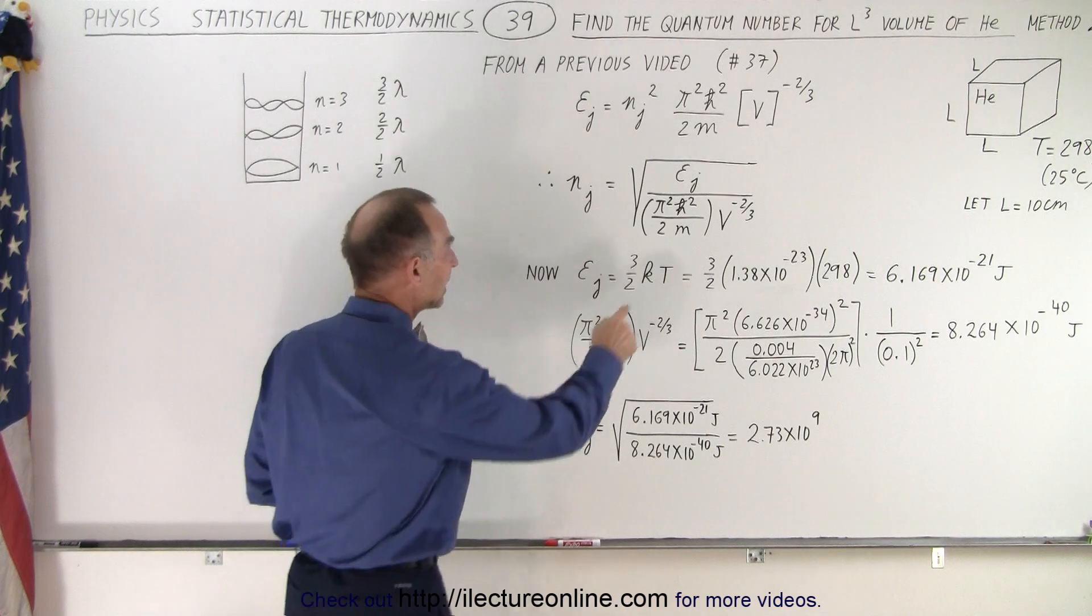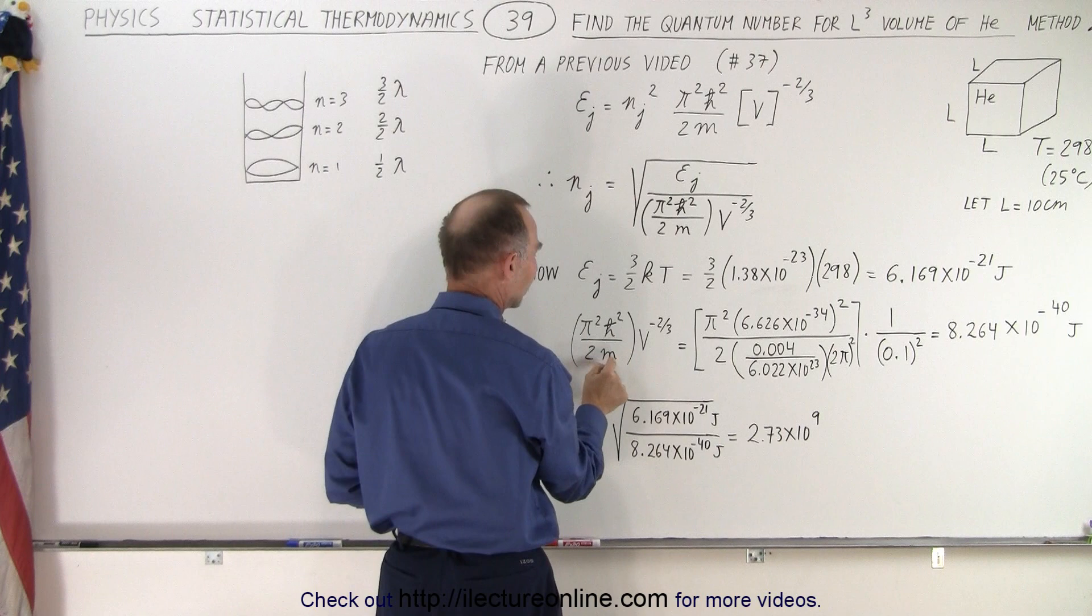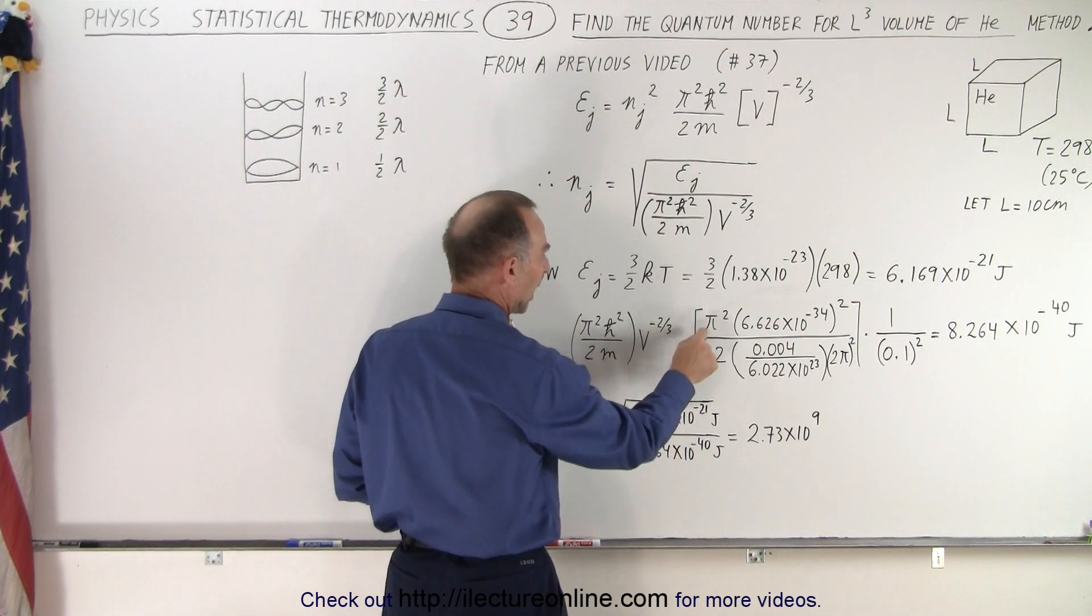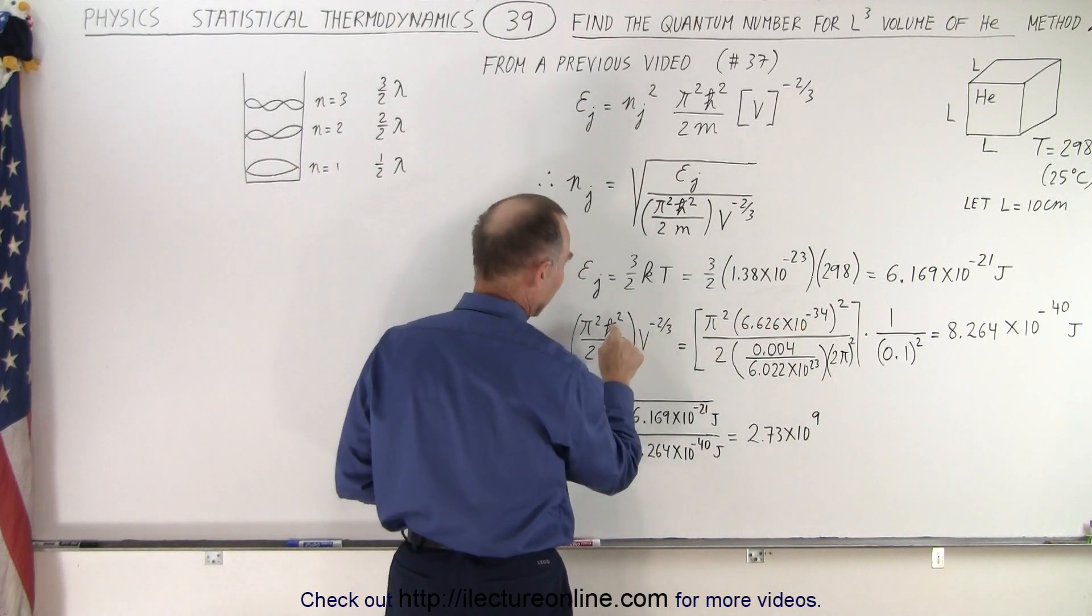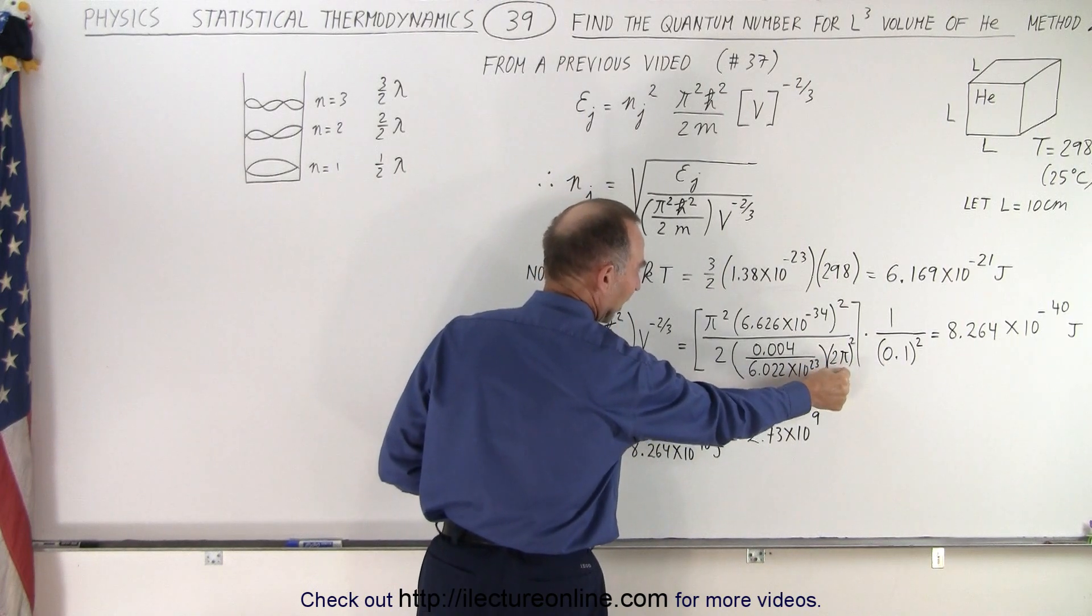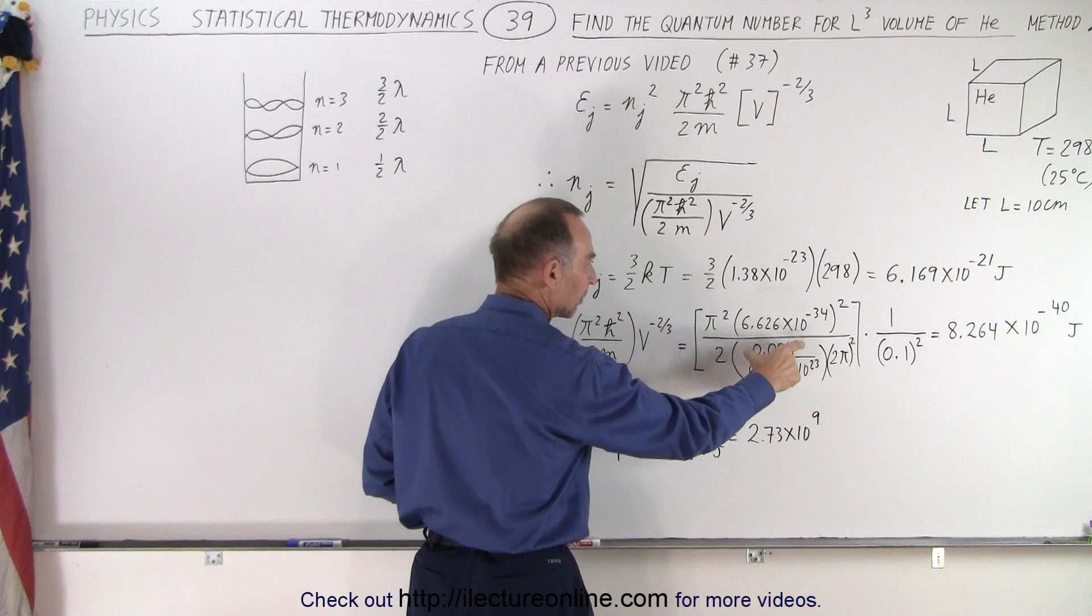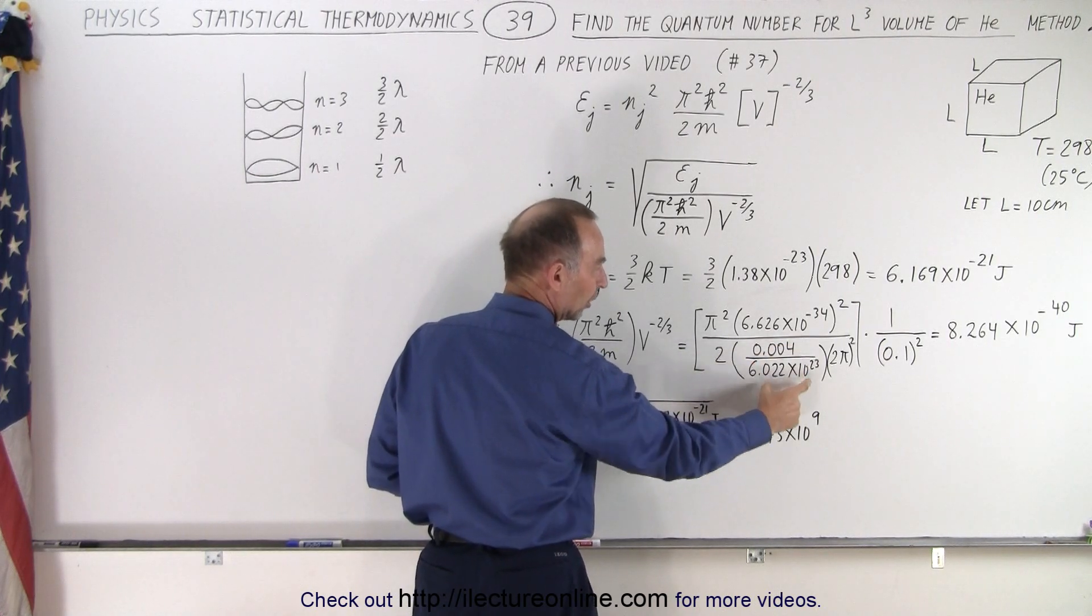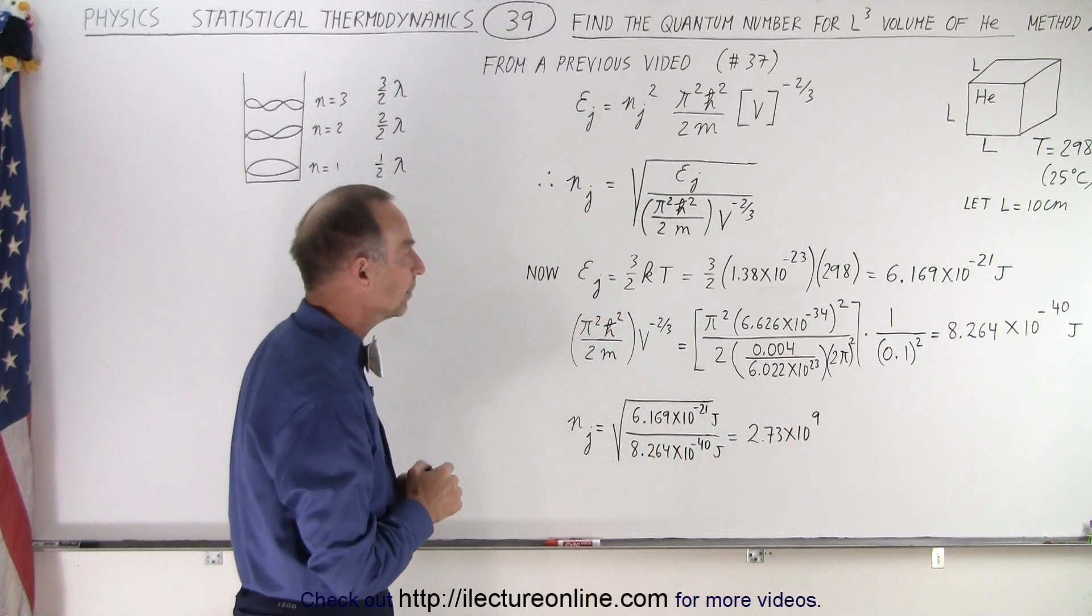So now we take the denominator here. We have pi squared h-bar squared divided by twice the mass, and the volume to the negative 2/3 power. So pi squared times Planck's constant squared. Of course, h-bar means Planck's constant divided by 2 pi, so in the denominator we have 2 pi squared. Twice the mass of a helium particle. This is the molar mass in kilograms, 0.004, divided by Avogadro's number. We get the mass of a single helium atom.